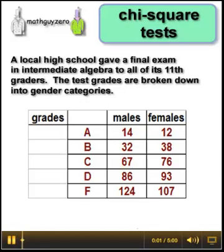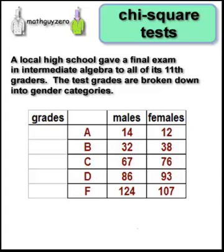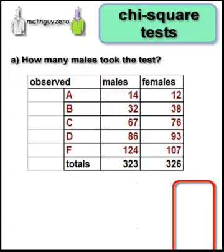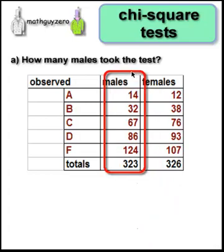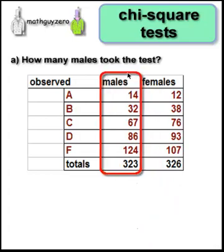Here are the grading results by gender for an 11th grade intermediate algebra test for an entire school. The first question asks how many males took the test. That's easy — just add them all up. Looks like 323 to me.